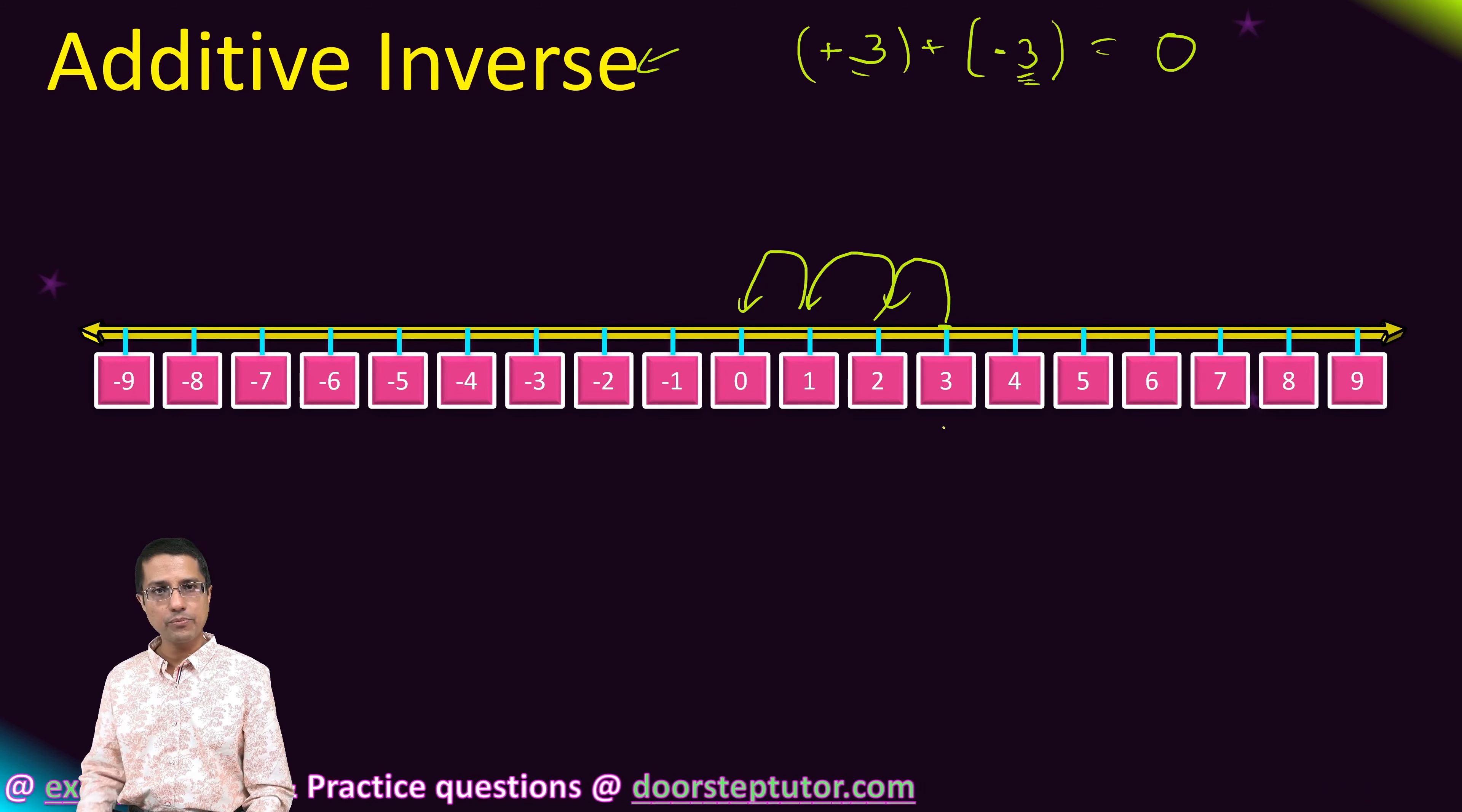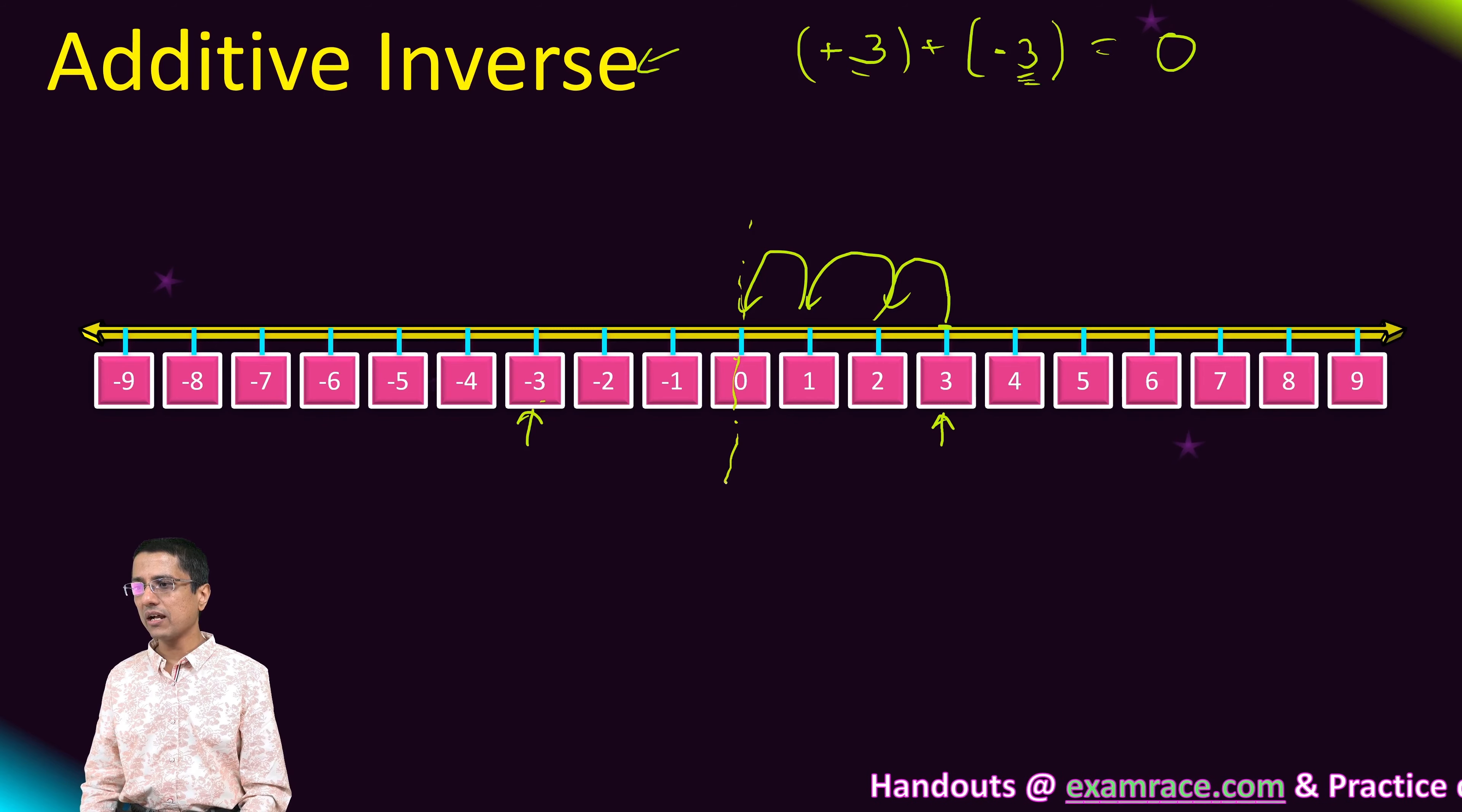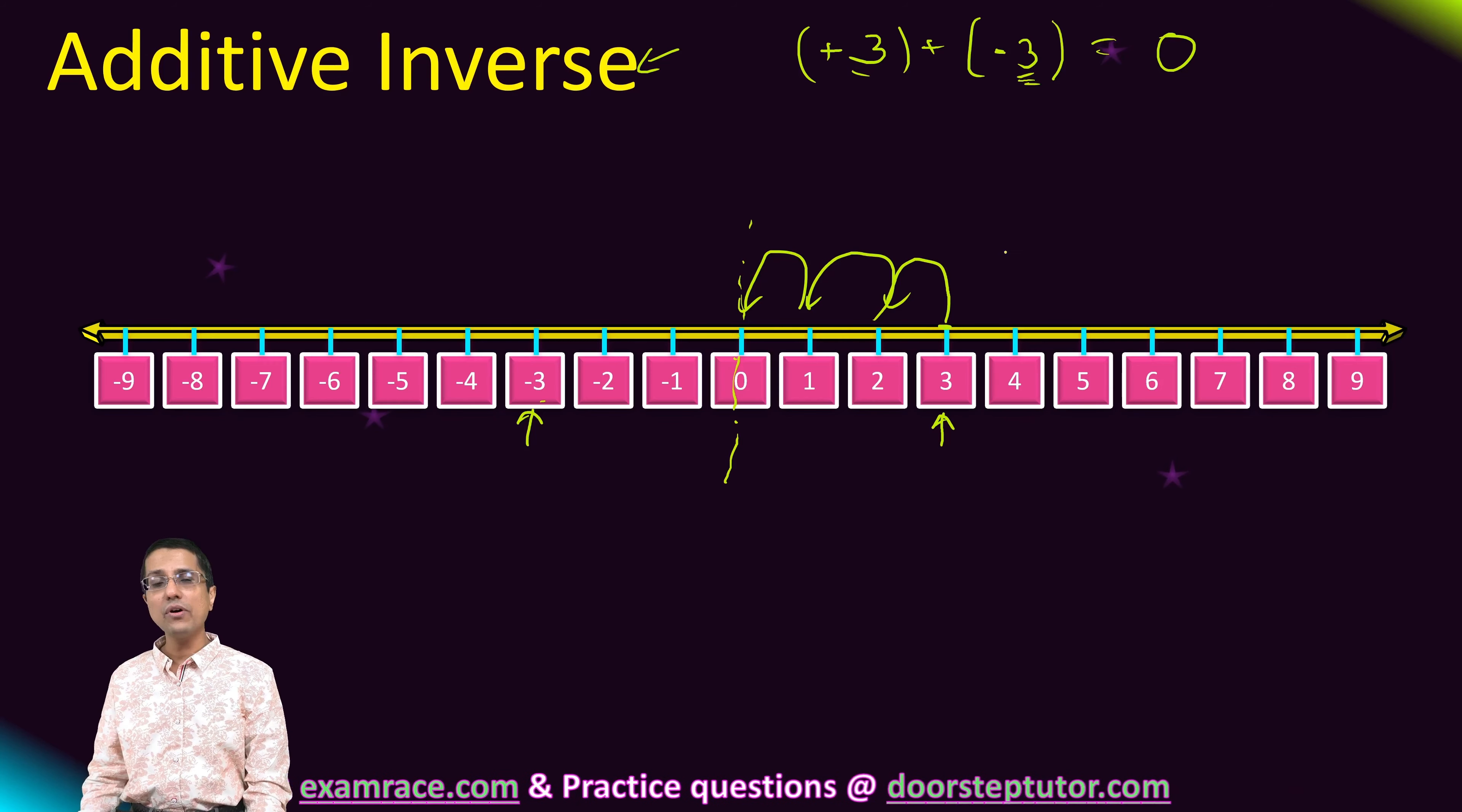If I put them on the number line, then plus 3 appears here, and minus 3 appears here. So these two points, plus 3 and minus 3, they are symmetric about the line. If I draw a line on 0, then plus 3 and minus 3 are symmetric. This holds for all the integers.